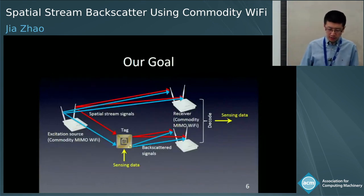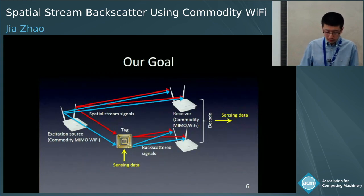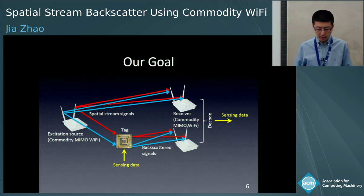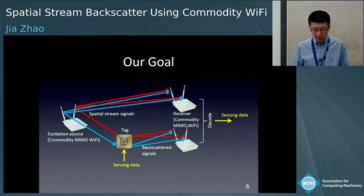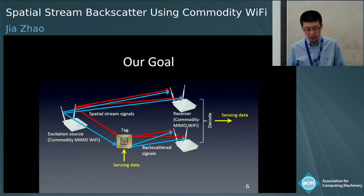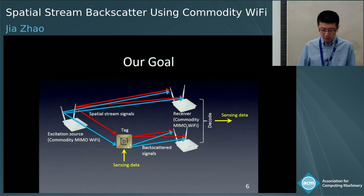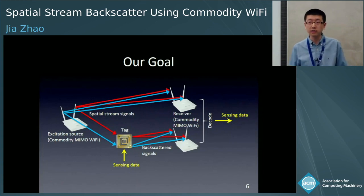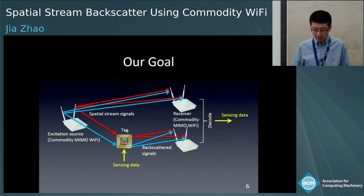What we want to do in this work is shown in this figure. A spatial multiplexing Wi-Fi device is used as an excitation signal, and the backscatter tag uses a spatial stream signal to carry sensing data. The Wi-Fi receiver decodes the sensing data by comparing the original packets and the backscatter packets.